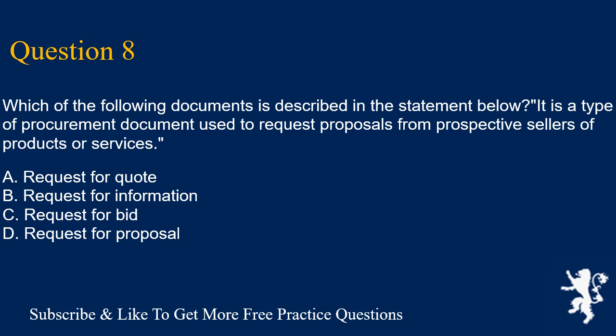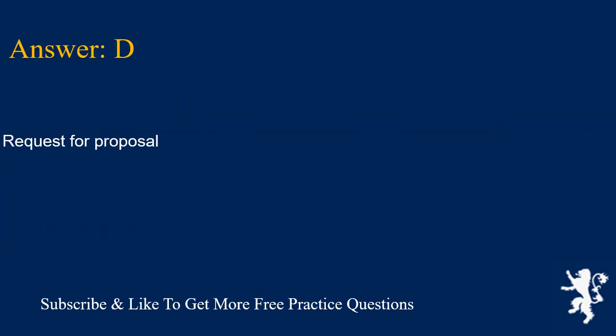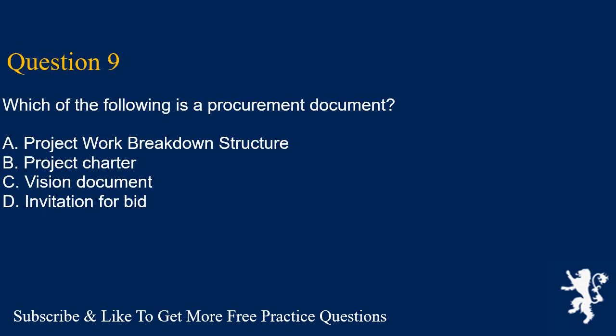Question 8: Which of the following documents is described as a type of procurement document used to request proposals from prospective sellers of products or services? A. Request for quote. B. Request for information. C. Request for bid. D. Request for proposal. Answer is D. Request for proposal.